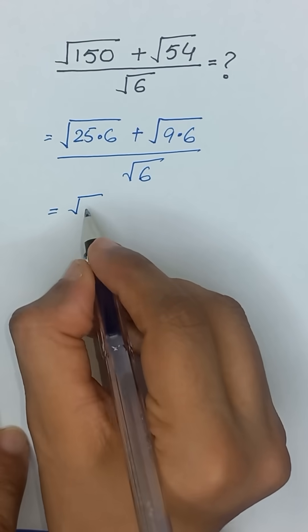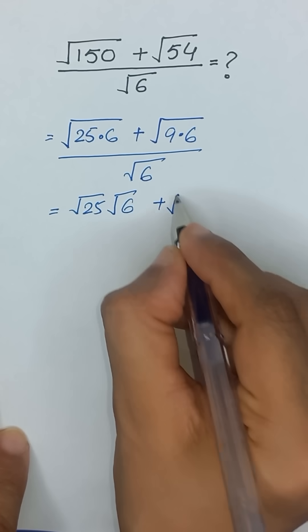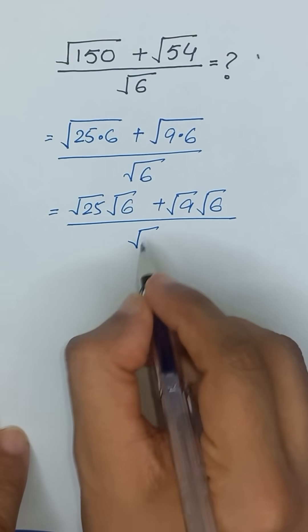We can write it as square root of 25 square root of 6 plus square root of 9 square root of 6 divided by square root of 6.